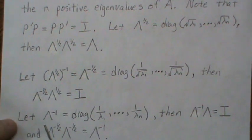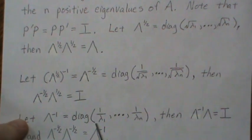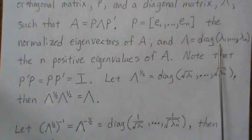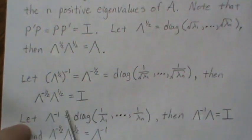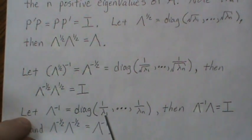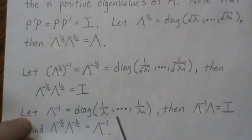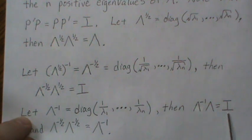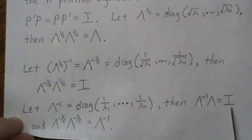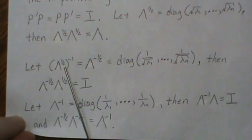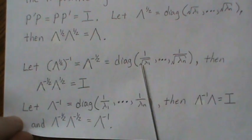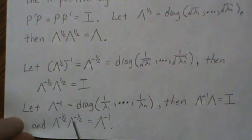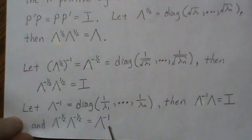And if we let lambda inverse be a diagonal matrix of the reciprocals of the eigenvalues, then lambda inverse times lambda gives you the identity back. Also, the way we defined lambda to the minus one-half, you can show that lambda to the minus one-half times lambda to the minus one-half is lambda inverse.